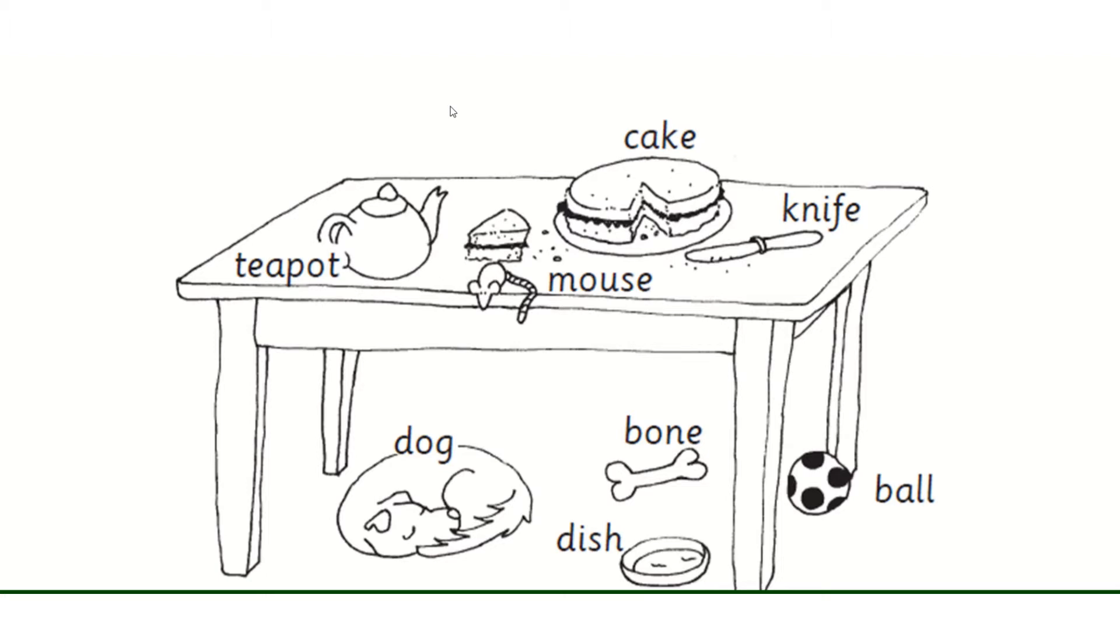Today in English we're going to be writing some sentences about the pictures you can see on this page. There are some things on the table and there are some things under the table.